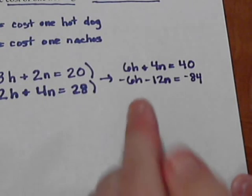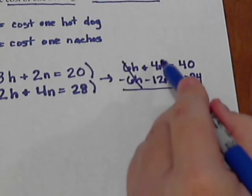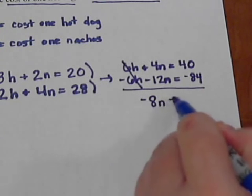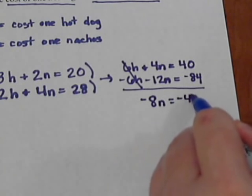Now we can combine these. The h's cancel. 4n minus 12n is negative 8n. Forty minus eighty-four is negative forty-four.